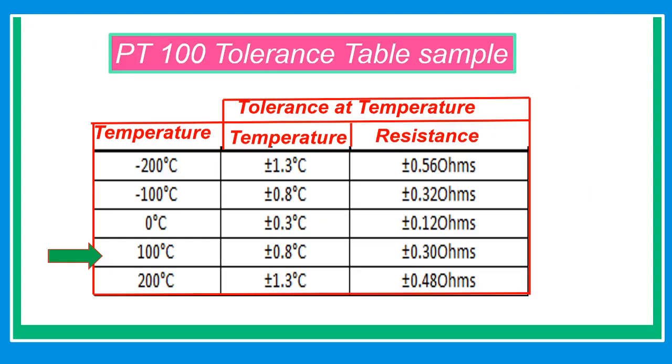This is the common table for tolerance of PT100 for class A and B. Example, at 100 degrees Celsius, the tolerance is 0.8 degrees Celsius or 0.30 ohms. But if you are going to measure 200 degrees Celsius from 0.8 degrees Celsius, it will increase to 1.3 degrees Celsius or 0.48 ohms.